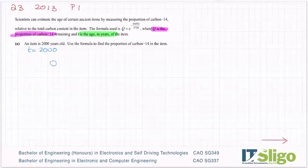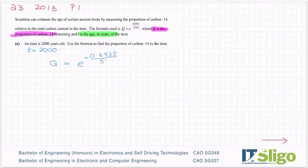So I need to solve for Q. The formula Q equals e to the minus 0.693T over 5730. I need to sub in for T, 693, and this item is 2000 years old over 5730.